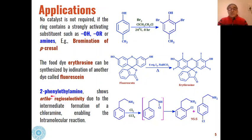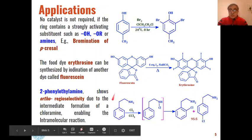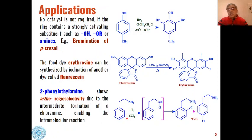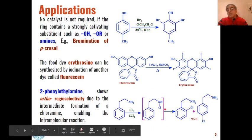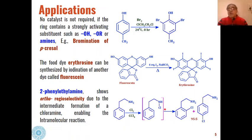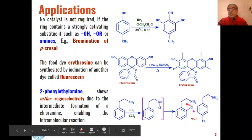Another example involves 2-phenylethylamine as the substrate. When chlorination is carried out in carbon tetrachloride, N-chlorination takes place first: one H from nitrogen and one Cl from the reagent combine to eliminate HCl, giving N-chloro-2-phenylethylamine as an intermediate. This intermediate then undergoes an intramolecular electrophilic aromatic substitution reaction to give either an ortho or para product.